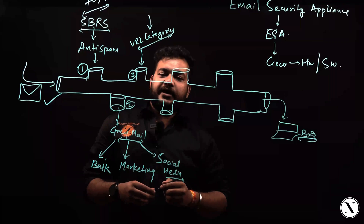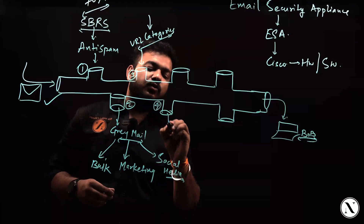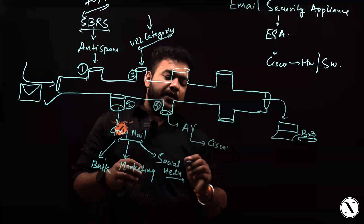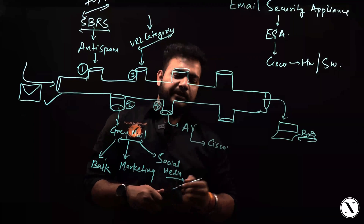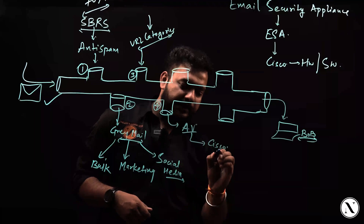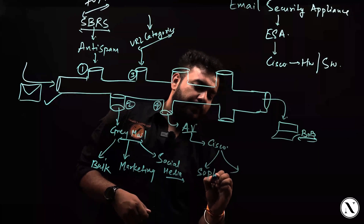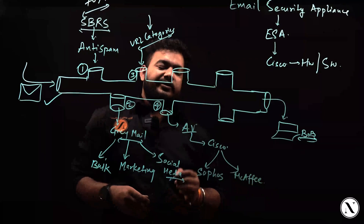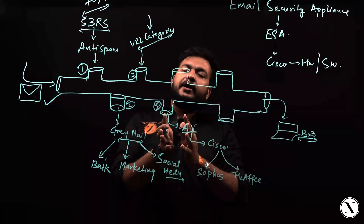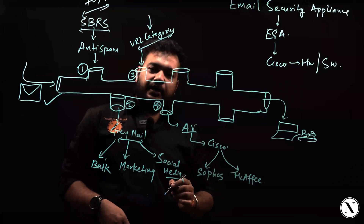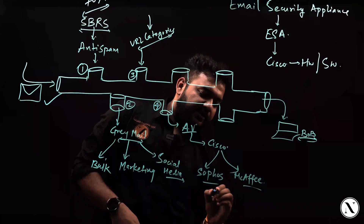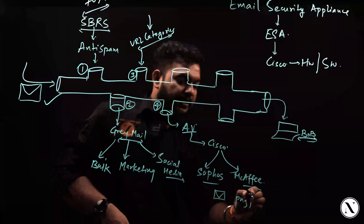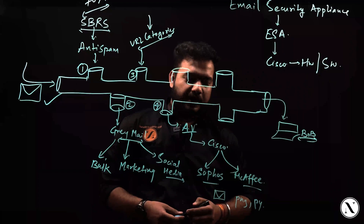If the email has crossed the third barrier, fourth, it has to go through antivirus services proposed by Cisco. The two products integrated inside Cisco Email Security Appliance as antivirus tools are Sophos and McAfee. Here, the email content itself will not be checked; instead, the email will be scanned for its attachments — such as PNG images, Python files, text files, or any other file type.